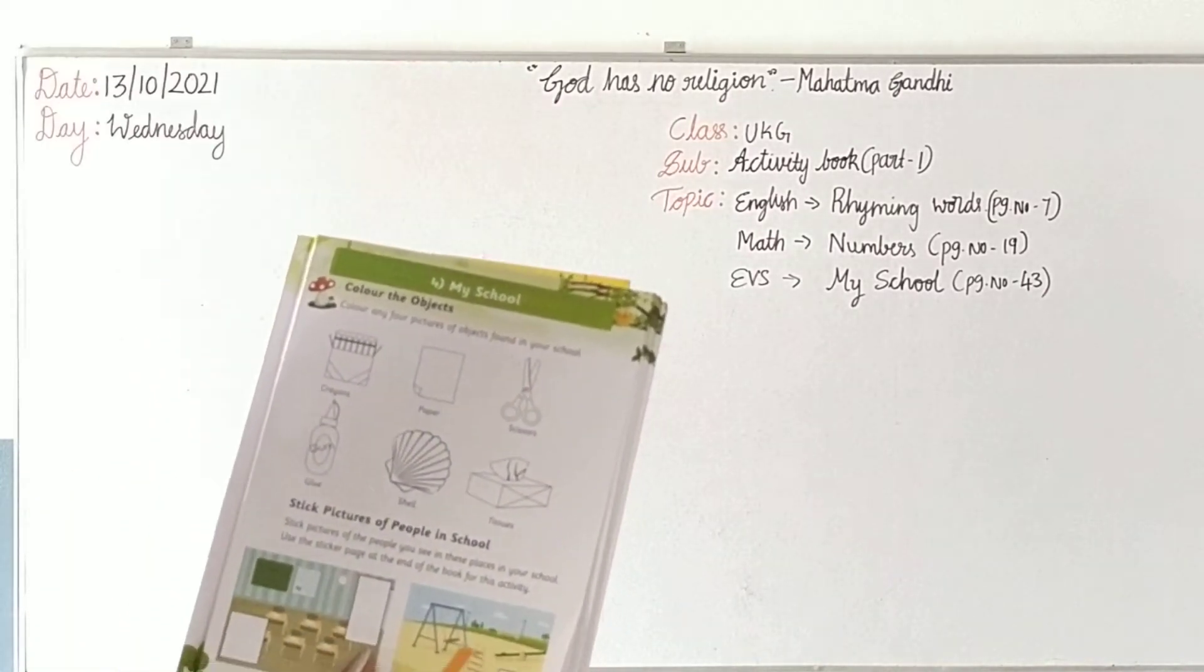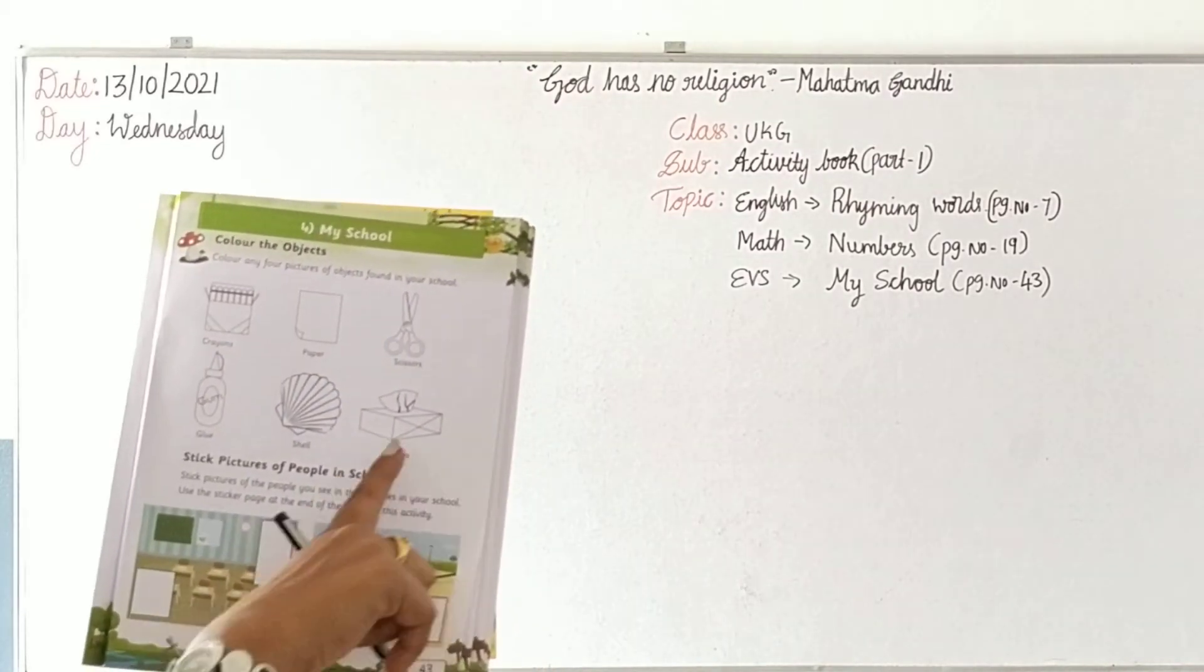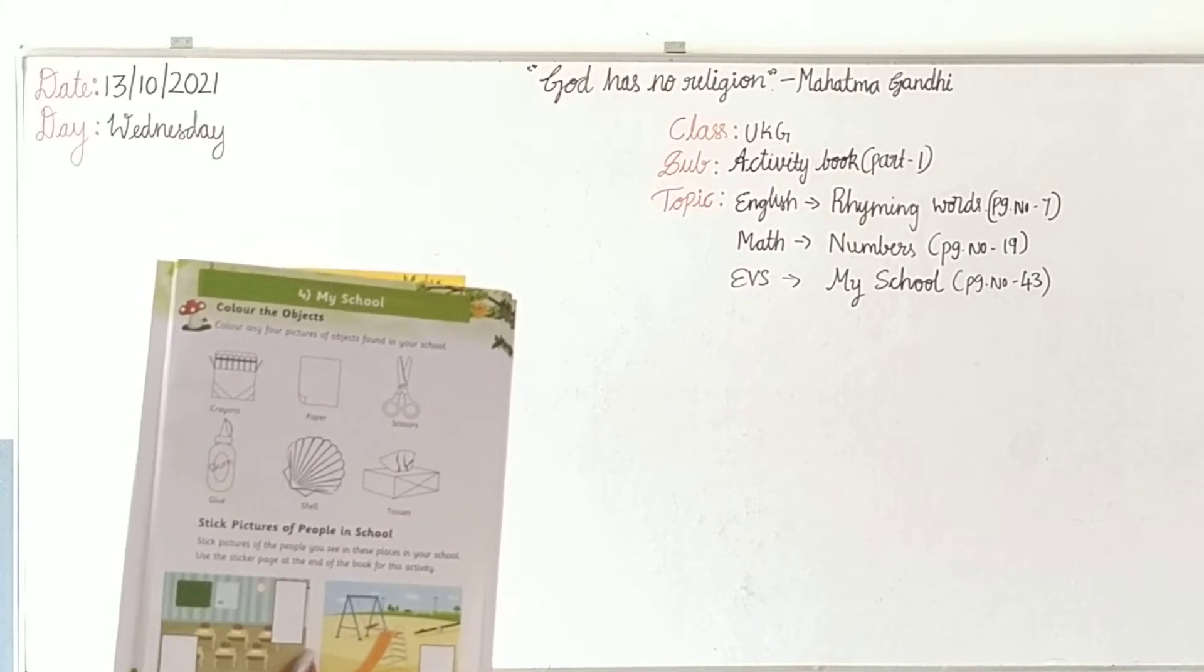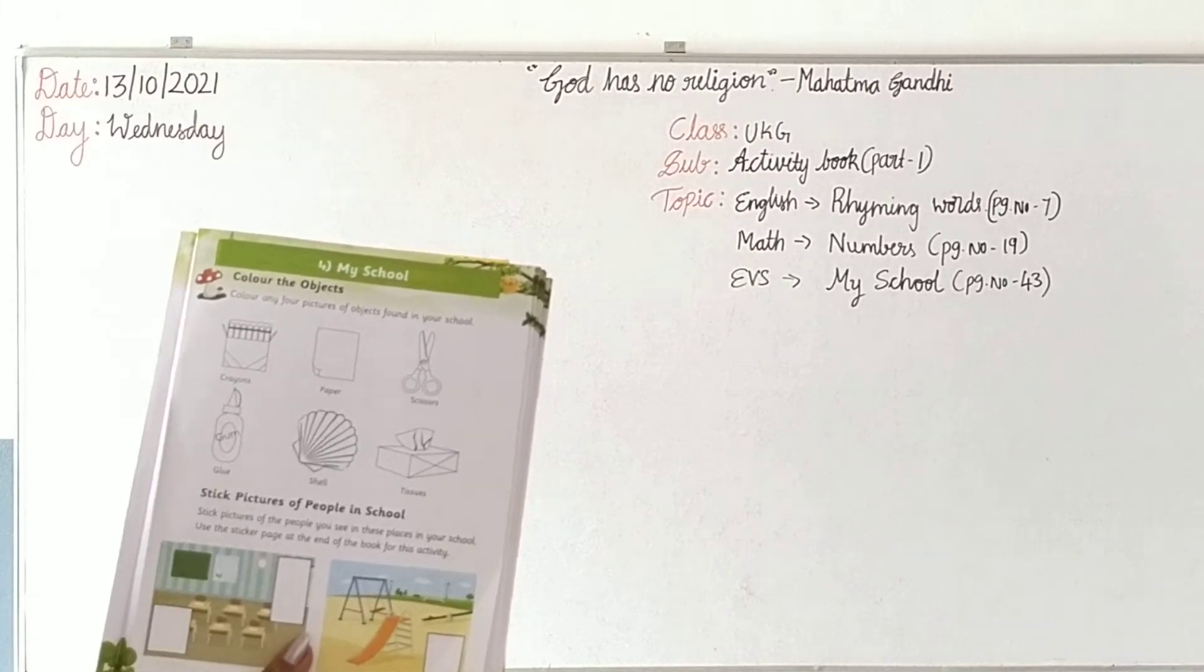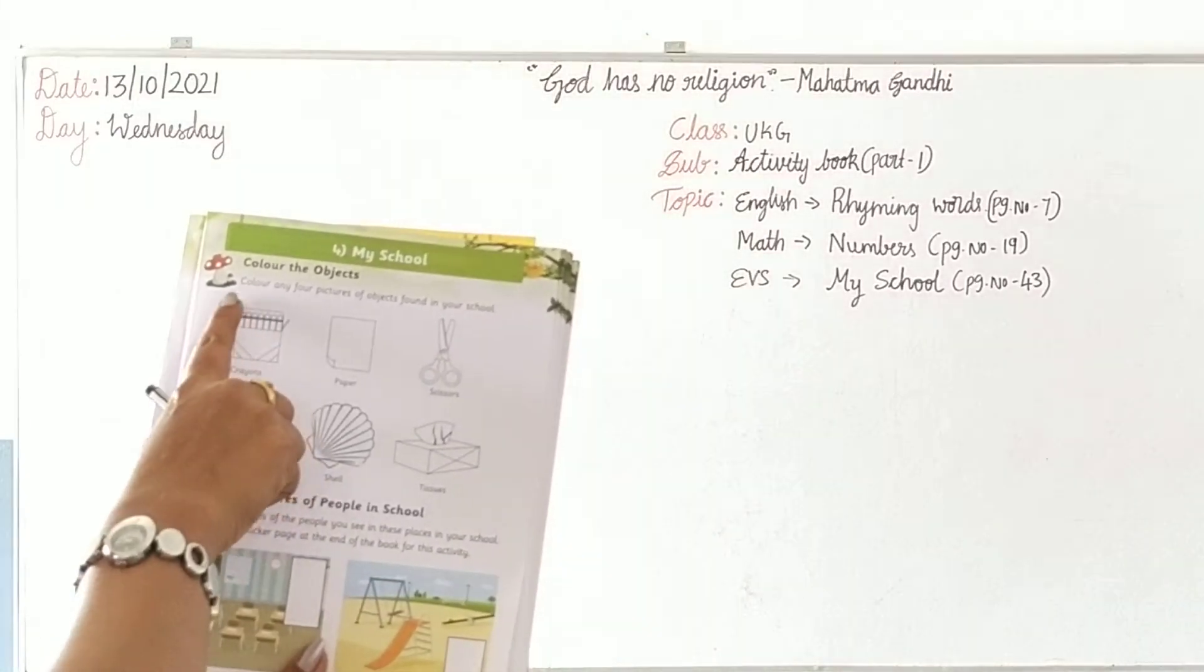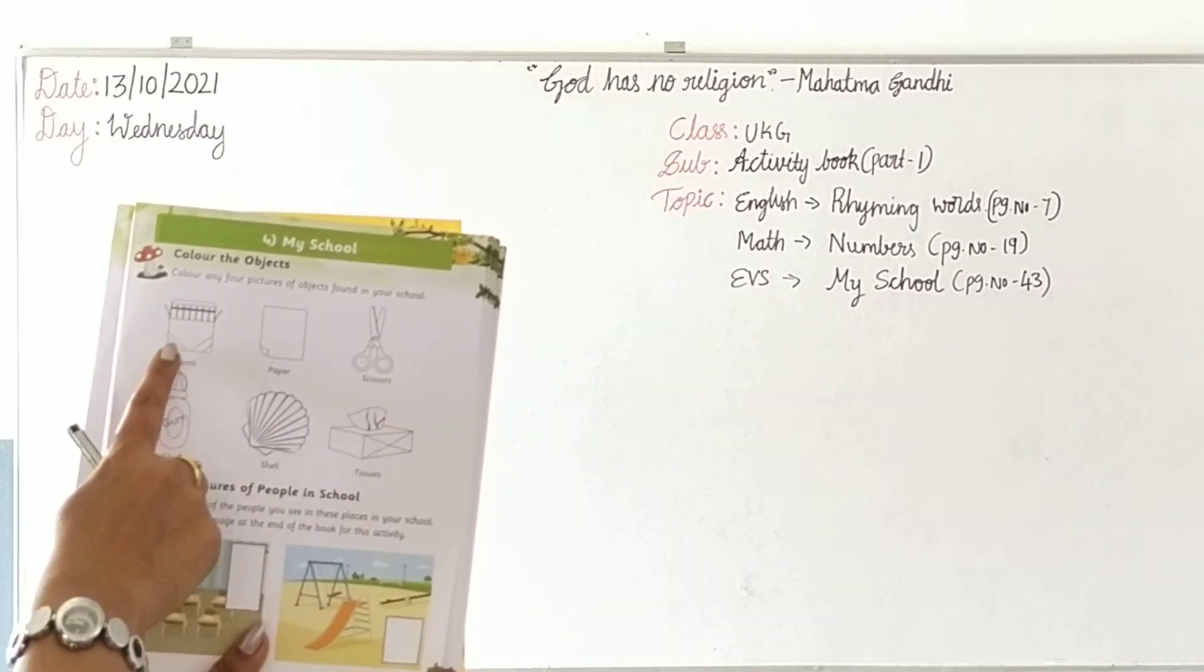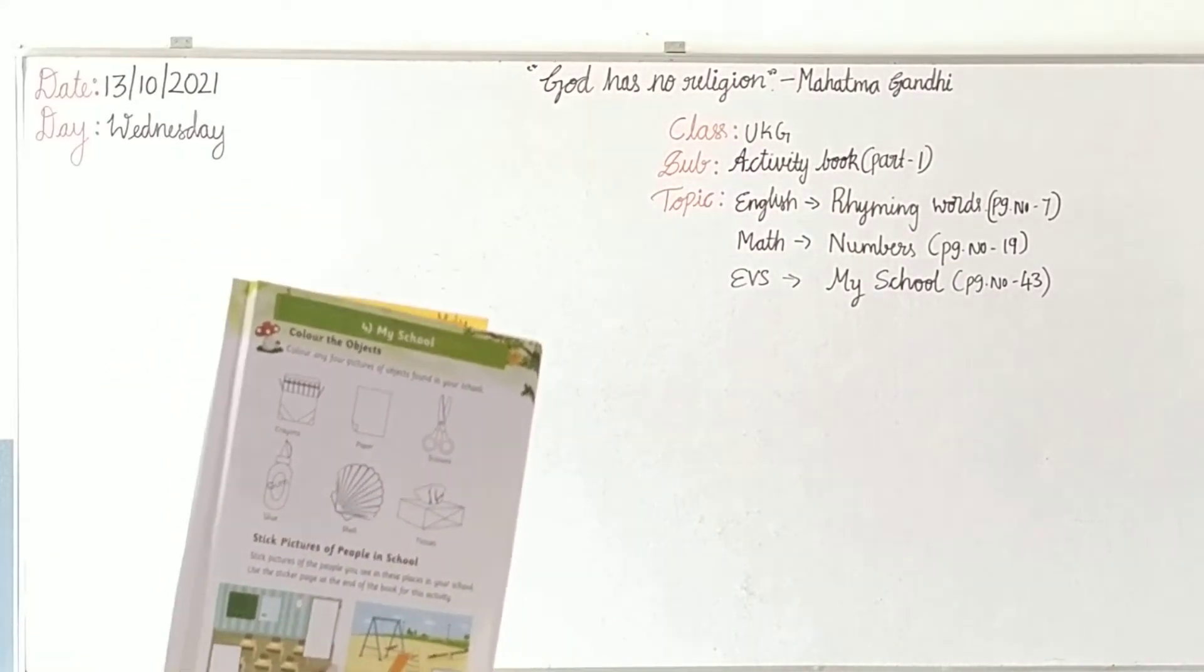But shell? No, we should not get shell at school. Tissues, tissues also we are using in our school, in our homes. While painting activity we are using. So you have to colour only four pictures, children. See, colour any four pictures, not everything. So you can colour crayons, paper, scissors, and glue. Four pictures you have to colour.